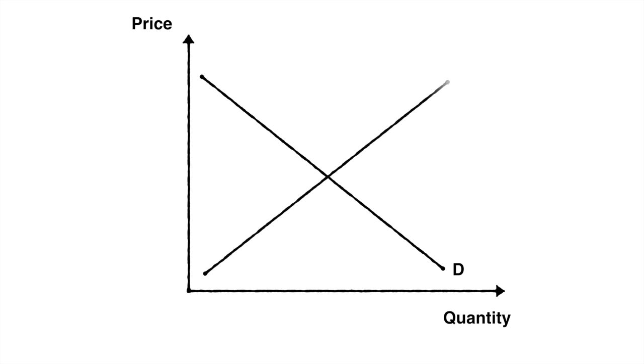You should always begin with this basic graph using this exact annotation. This is the standard AS economics graph for equilibrium and should always be your starting point in demand and supply analysis.